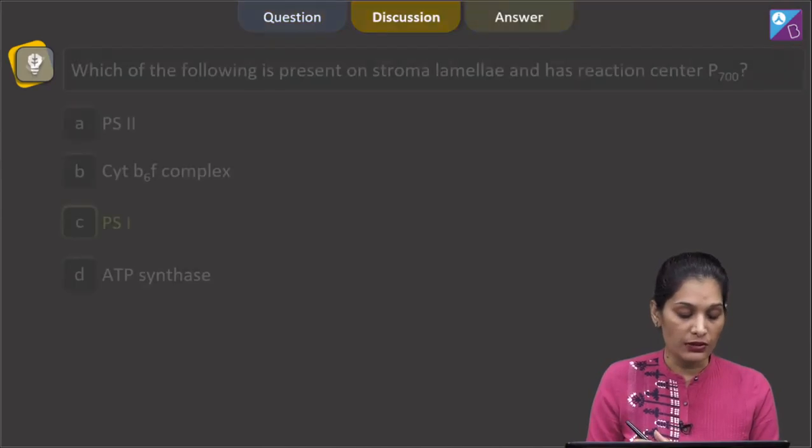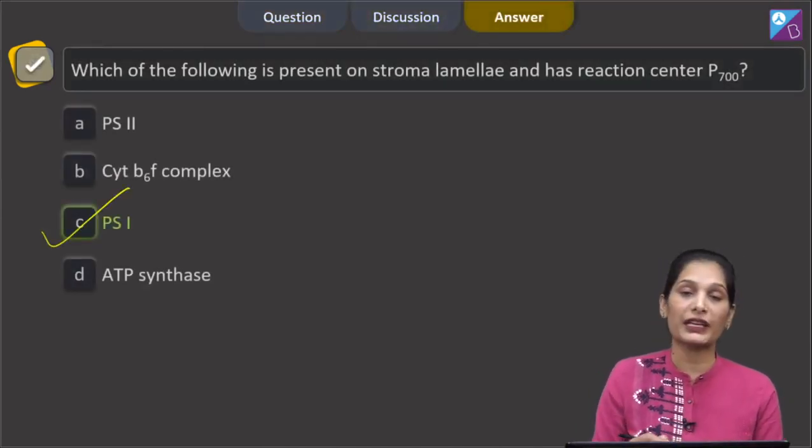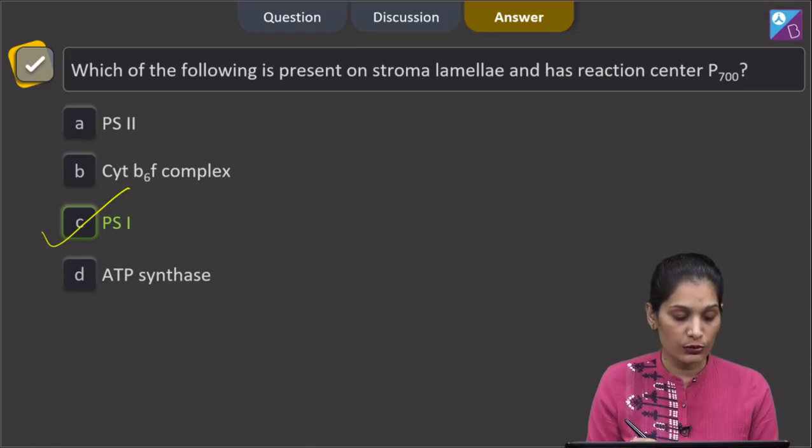So it is the PS1 which is present on the stroma lamellae and has reaction center p700. So the correct option for the given question is option C that is PS1. Let us move to the next question.